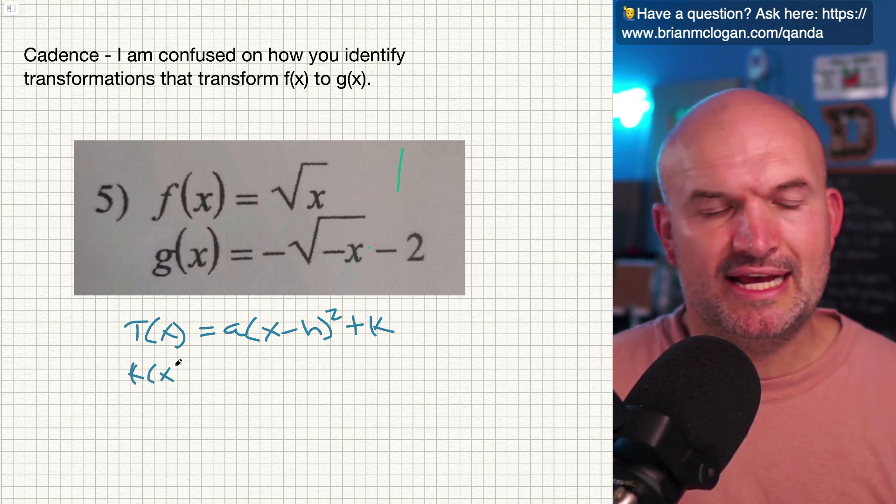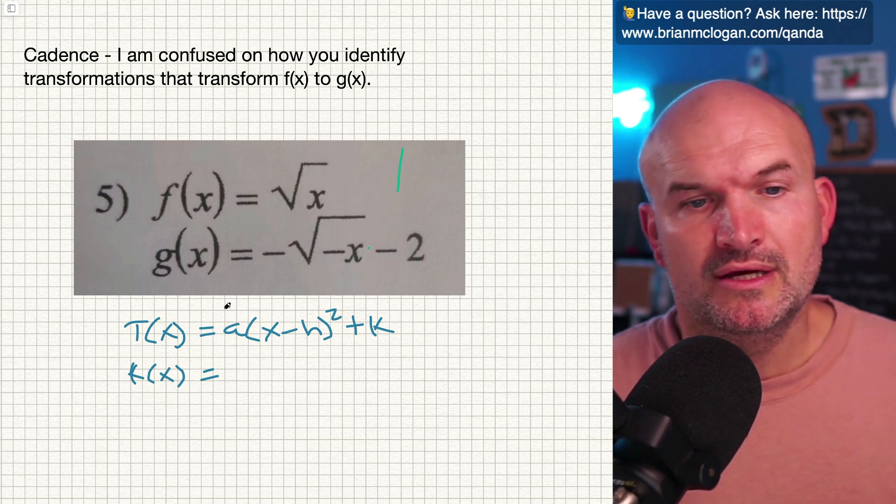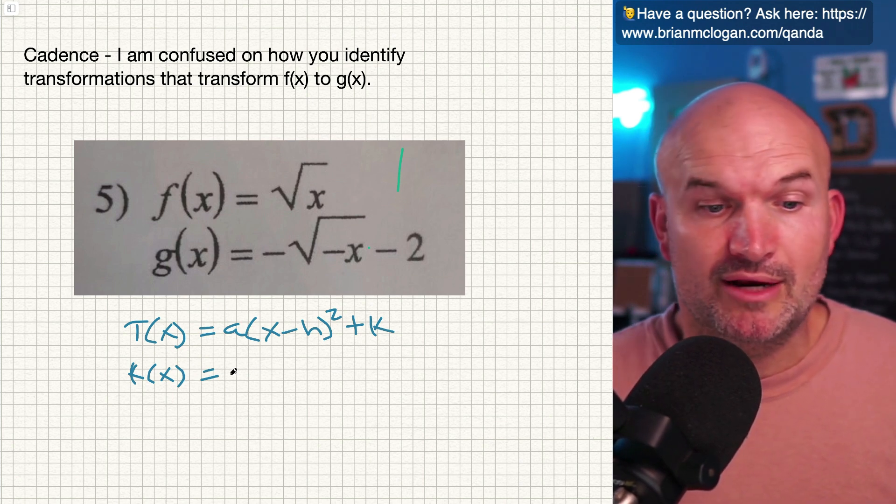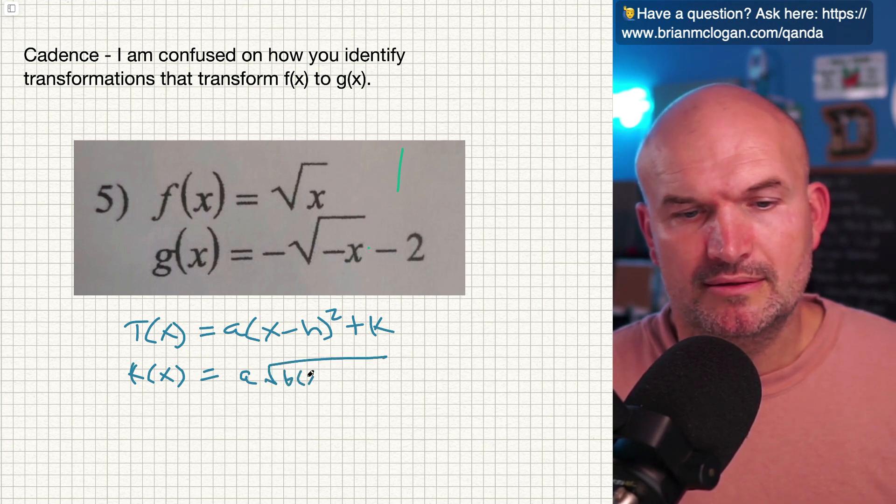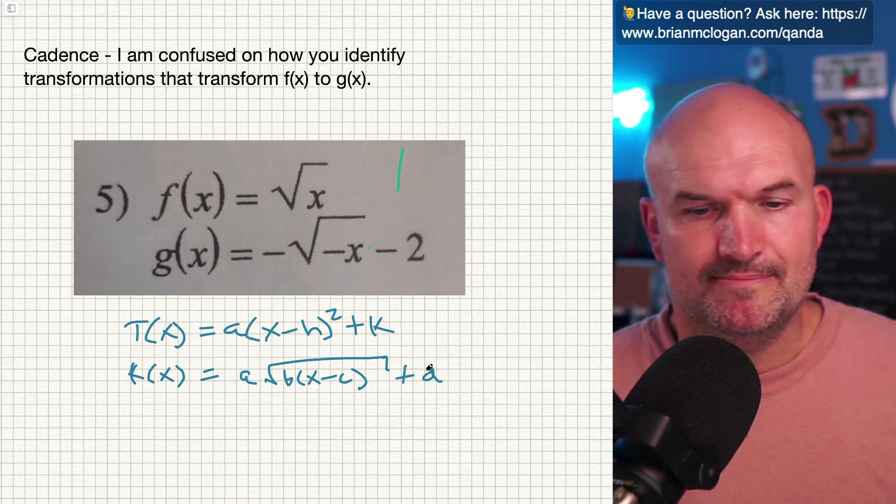So let's look at a general function, the general transformations for a radical. So we have a, square root of b times x minus c plus d.